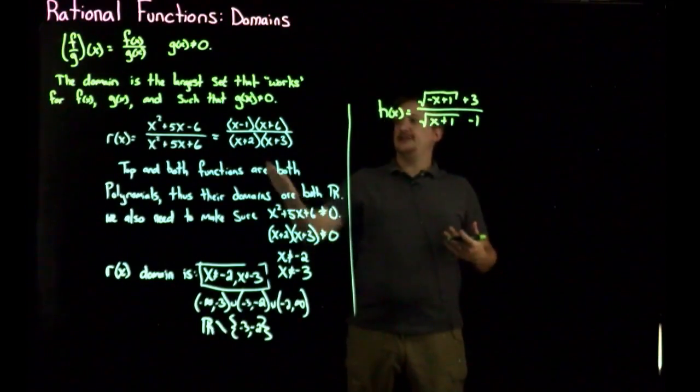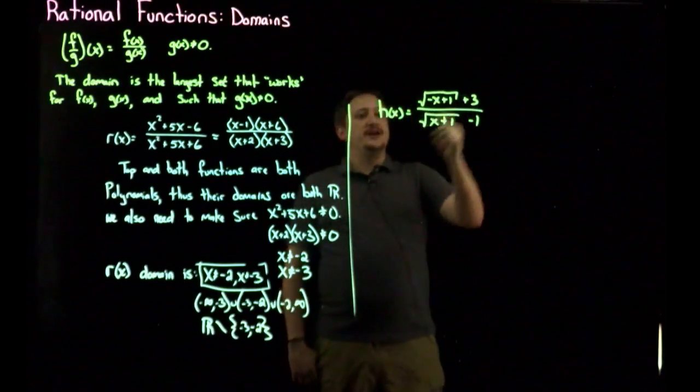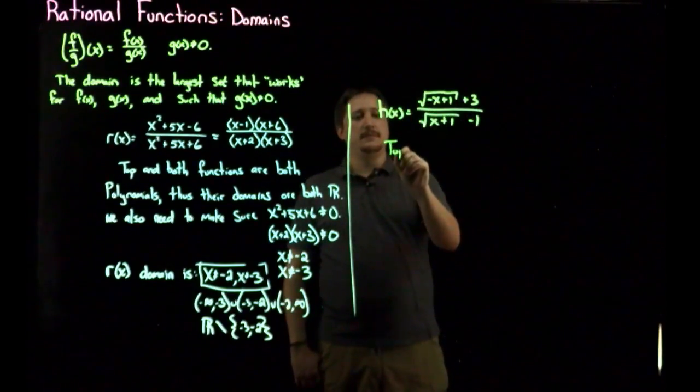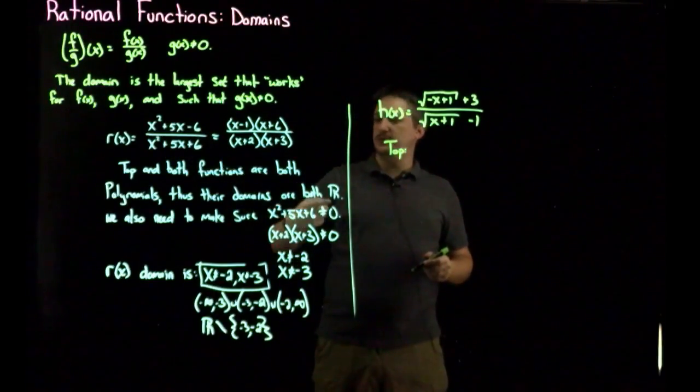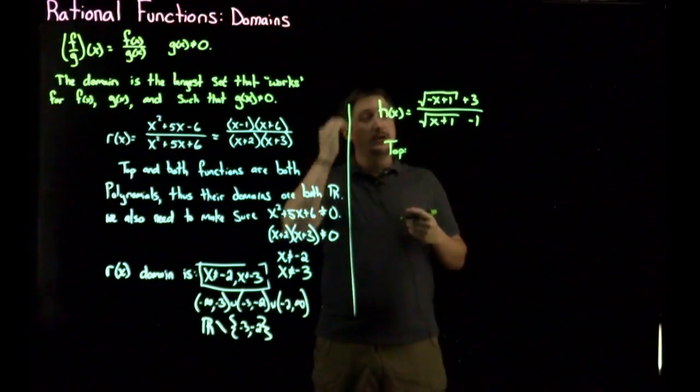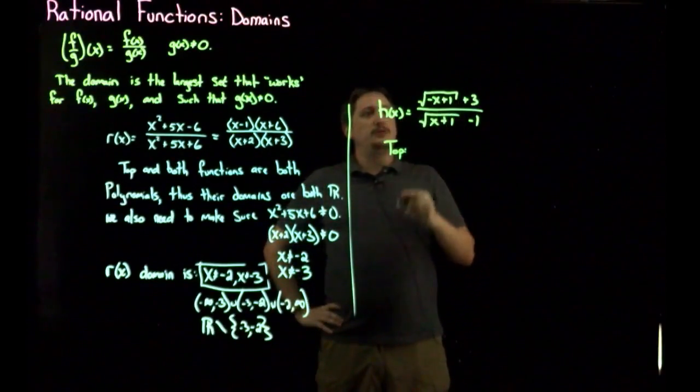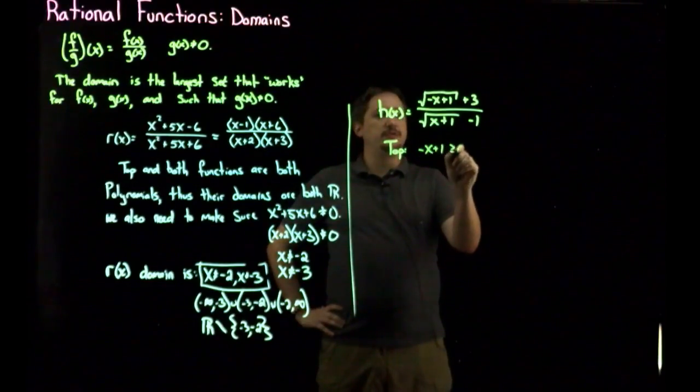And then also, I need to cut out the chance that the bottom is zero. For the top, before the top was just a polynomial, so it was all real numbers. Here, though, I have a square root, an even root. So that means that I need the inside to be greater than or equal to zero. So I need negative x plus 1 greater than or equal to zero. Move the x over. I have 1 greater than or equal to x.